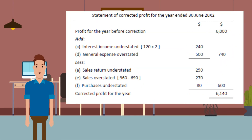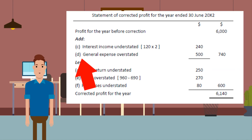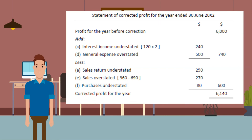Example time. Continuing from the previous example, the following errors were discovered. A: Goods of $250 returned by the customer were omitted from the sales returns account. B: Payment of $1000 for wages was erroneously recorded to the stationery account. C: Interest of $120 received from the bank was debited to the interest account. D: Purchase of a printer for $500 was debited to the general expense account. E: A sale of $690 was recorded in the sales account as $960. F: Purchases of goods amounting to $80 were not recorded. Profit for the year ended June 30, 2022 was $6000.